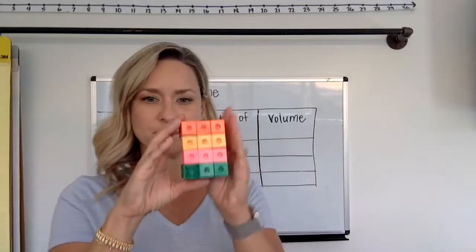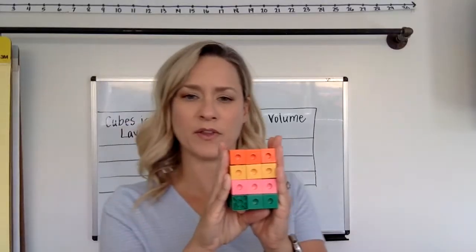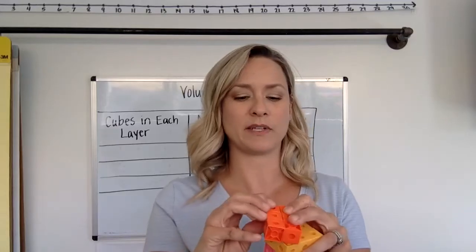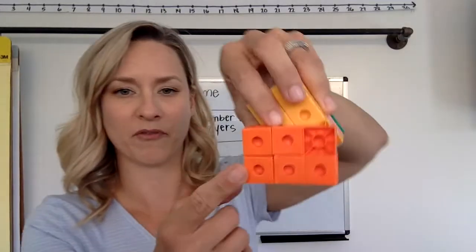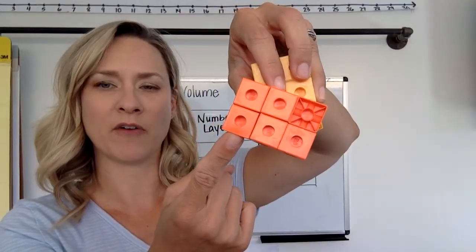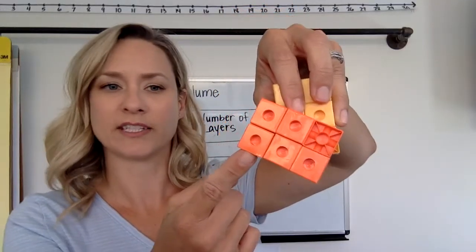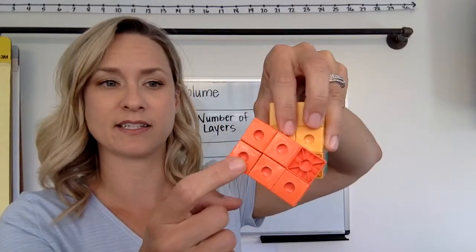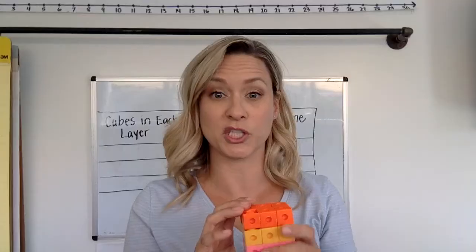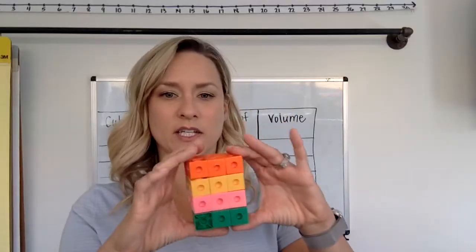One last thing - you probably know that each of these is made up of one smaller cube. So when we talk about volume, we say like 24 cubic units because they're made of little cubes. You can see why they're called cubic units.